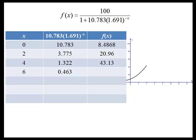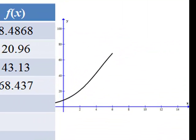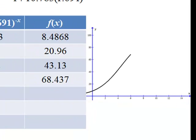We can see as x is 6, it's already less than 1 and our f of x value is already up to 68. Notice in the graph it's actually increasing pretty quickly right now.